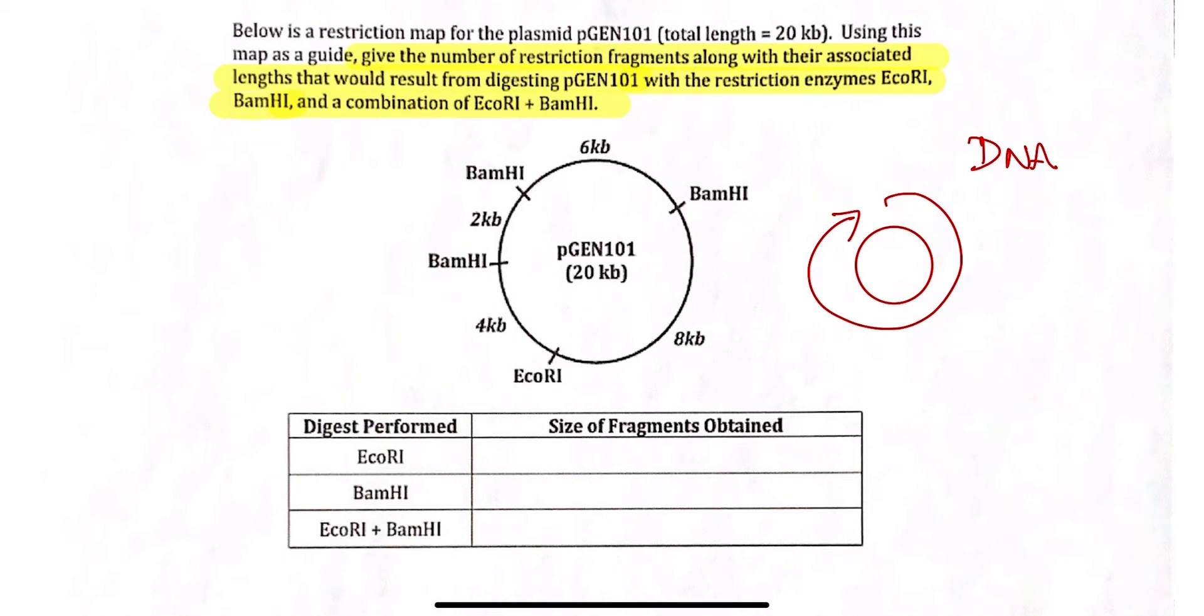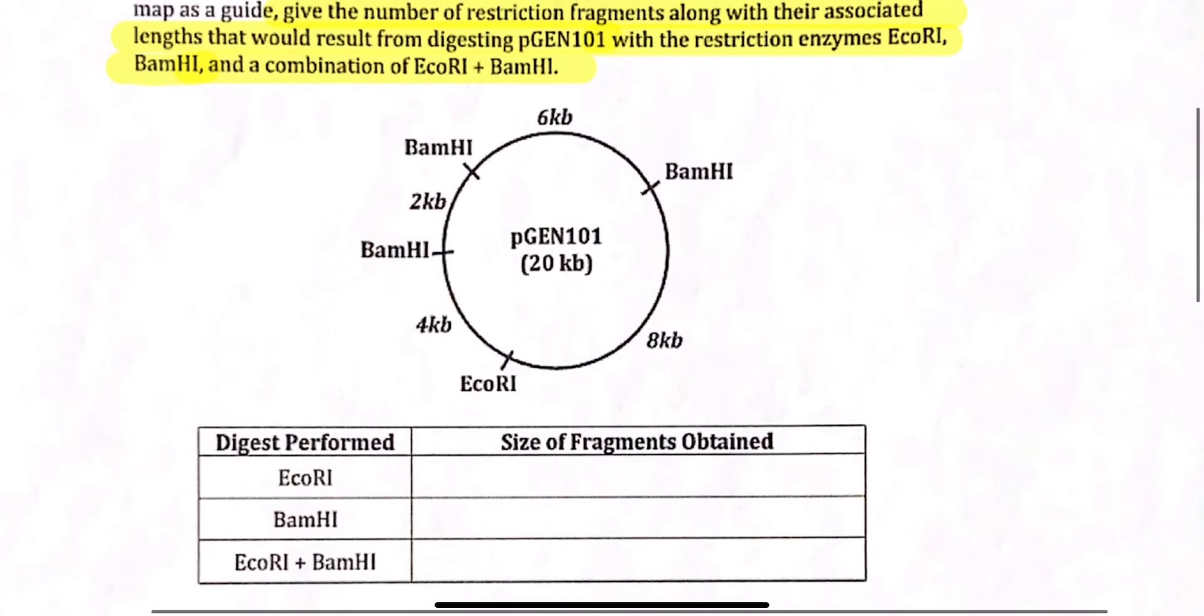So what we'll have to do here is look at what kb length we'll end up with if we only have EcoR1 present, what kb length we will end up, or maybe multiple lengths will end up if we have only BamHI, and then what will we get if both of them are present there in the plasmid mixture.